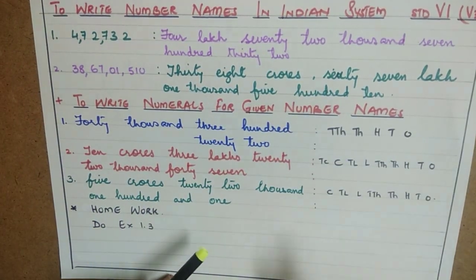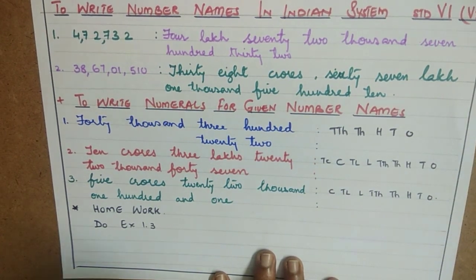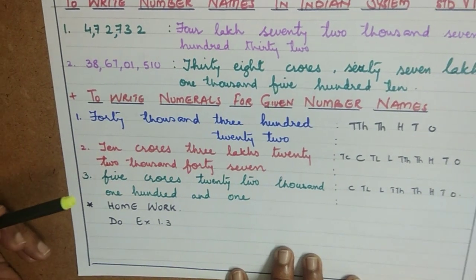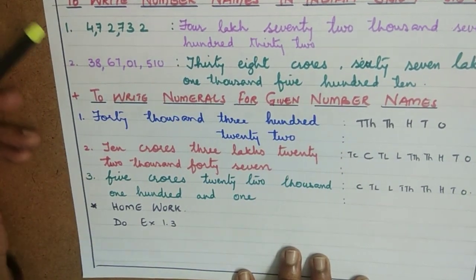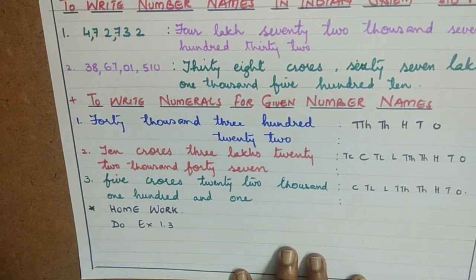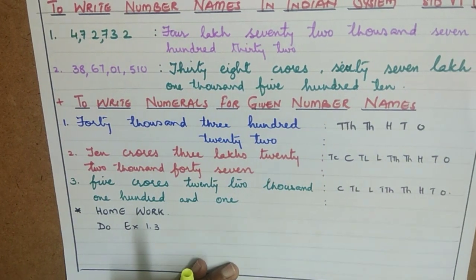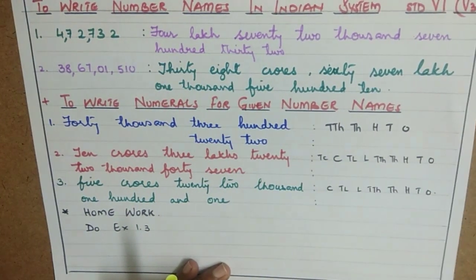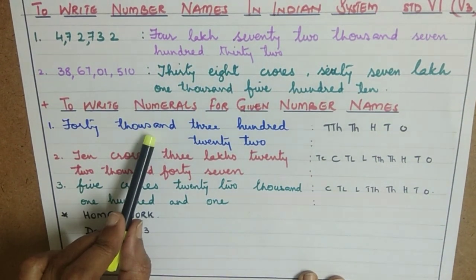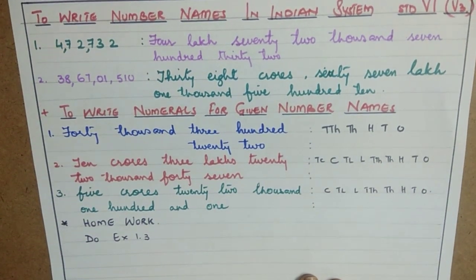Now, how to write the numerals for a given number name in the Indian system. The problem arises here because writing the number name is easy — you simply separate into periods and write the name. But when you are required to write the numeral for the number name, you should be very cautious. So first let us read: 40,322 is the given number name.